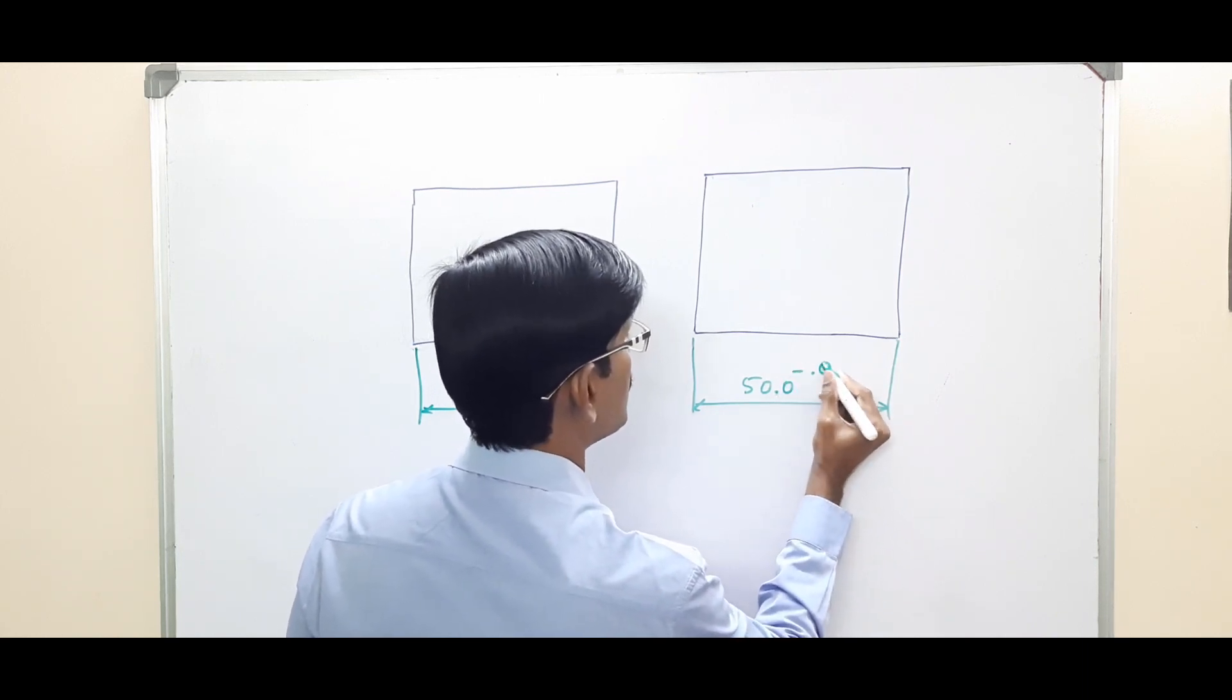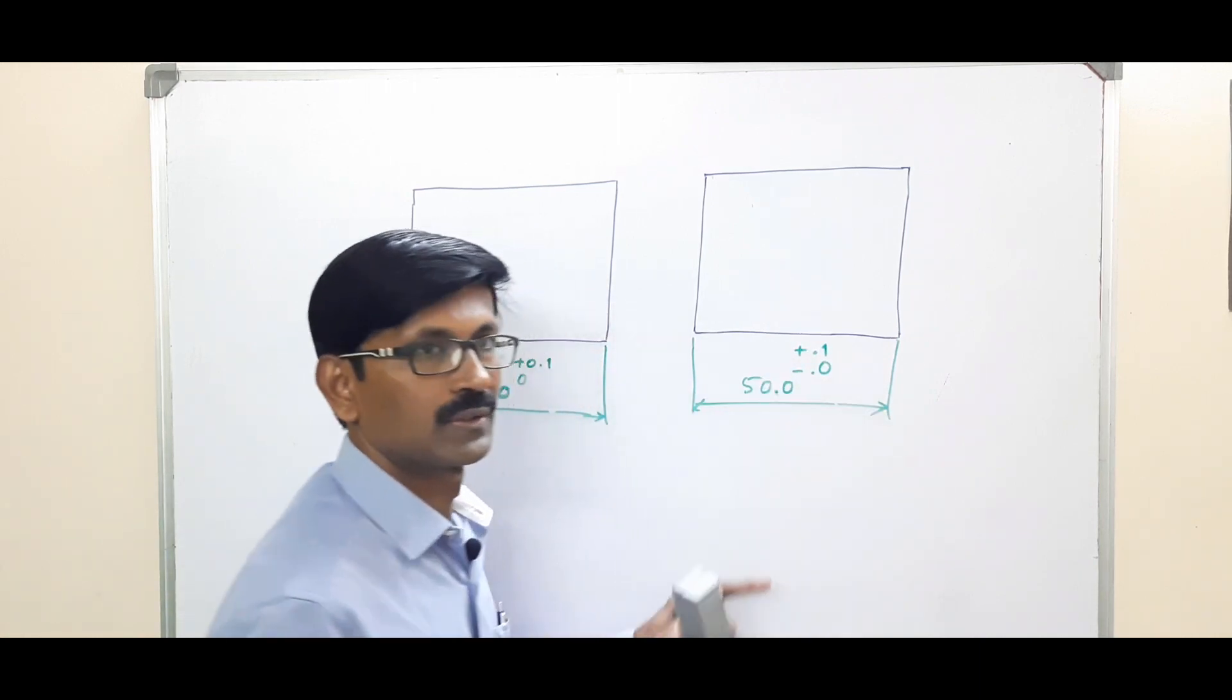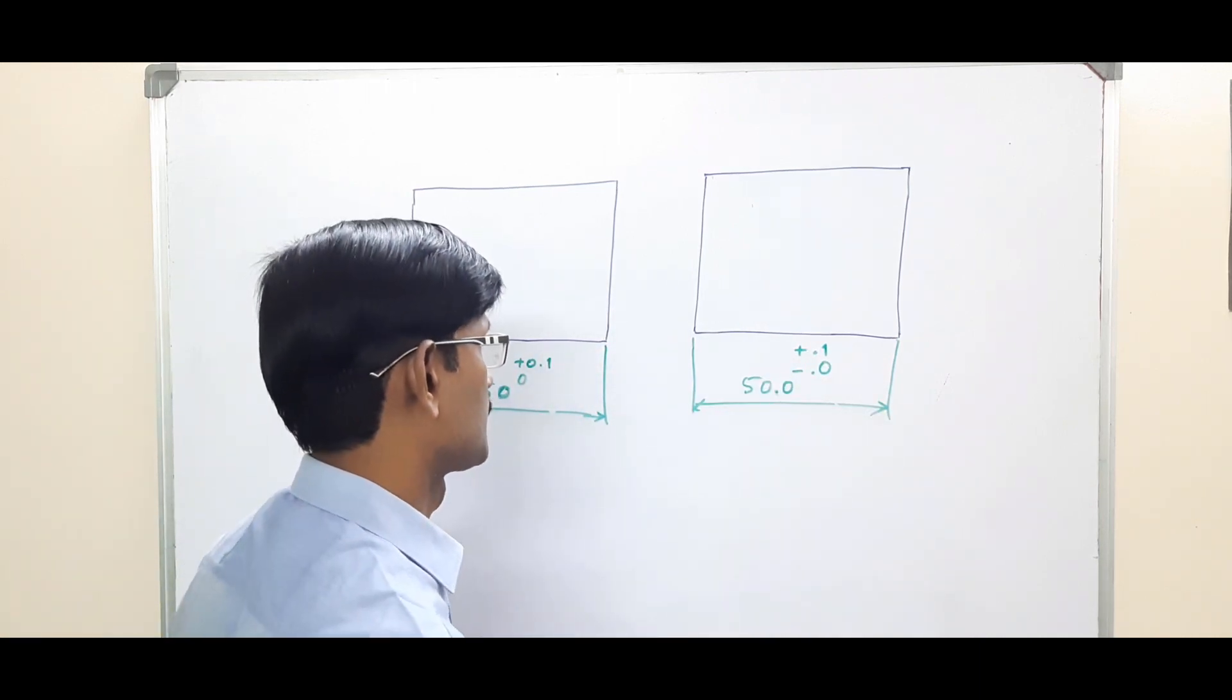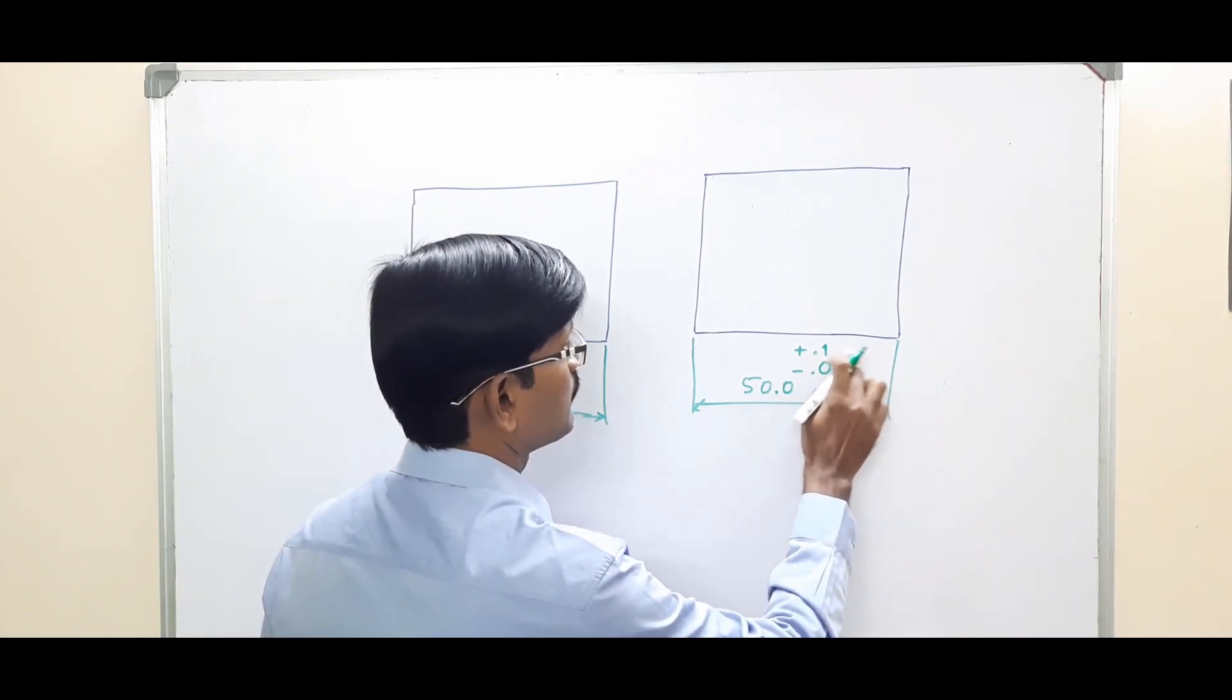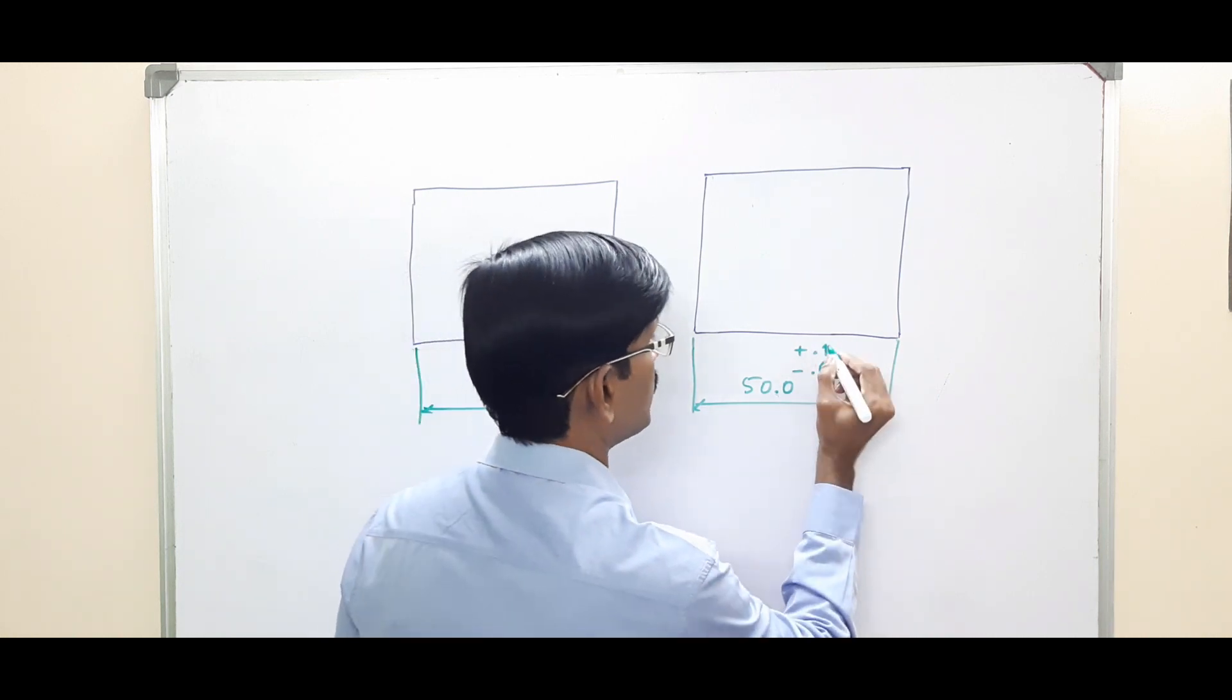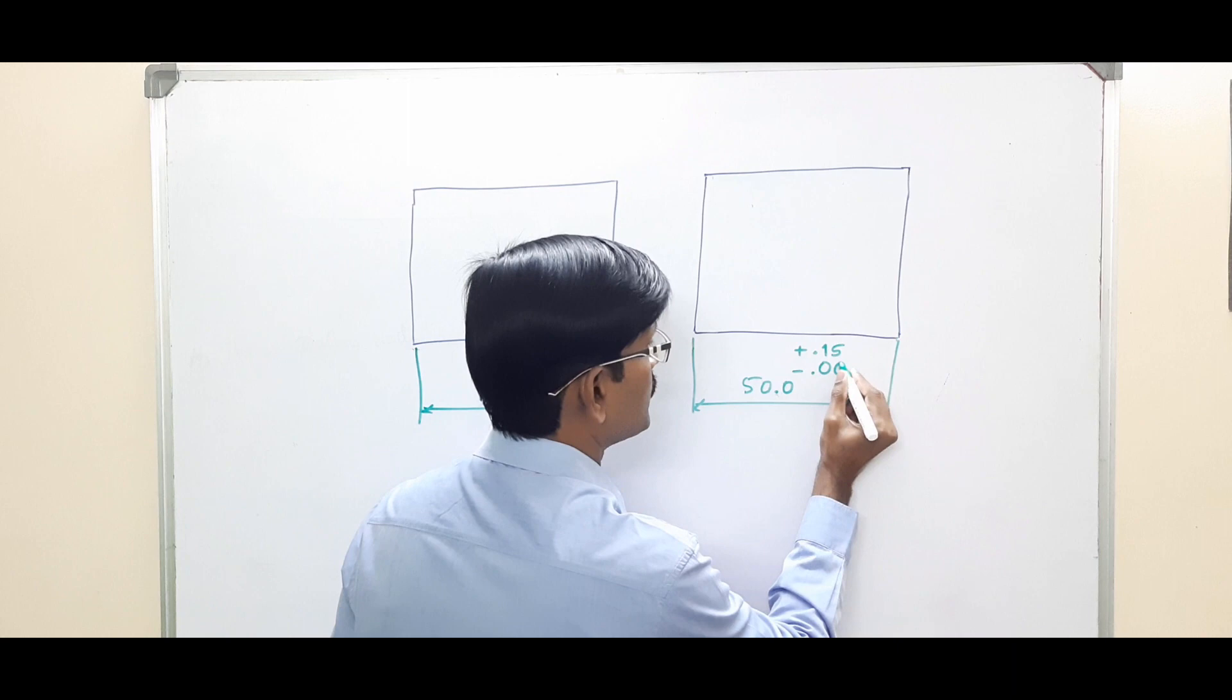When it is an inch basis system, we have to add a 0 here: minus 0.0, plus 0.1. So this is in inch basis system. Now, how many zeros should come is dependent upon the decimal places in the tolerance. If the tolerance is 0.15, then I have to add one zero here, one more zero here for uniformity.